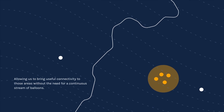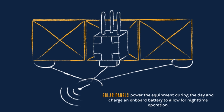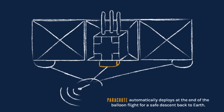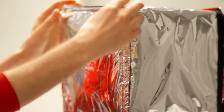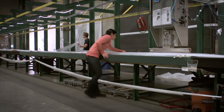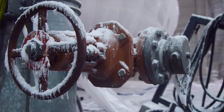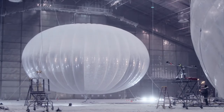Each balloon is equipped with a transceiver to transmit connectivity from ground stations across the balloon network and to devices, solar panels to power equipment during the day and to transfer energy to the battery for use at night, a parachute that deploys when the balloon is returned to the surface, and the flight capsule — the brains of the system. Since the atmosphere is still thin in the stratosphere, the technology is shielded to prevent destruction from UV rays and insulated to withstand cold temperatures up to negative 90 degrees Celsius. The balloons are also specially manufactured and stitched to withstand these conditions. Currently, each balloon can operate for approximately 100 days without returning to the surface.